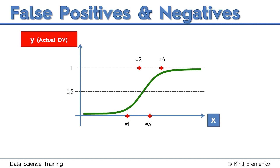We pick out four values that we know exist in our data set — the ones used to create this logistic regression — and do the same thing with them: see where they end up when we apply the model. The label on the vertical axis has changed to Y because these are actual known values. In red is the actual value of the dependent variable. Observations one and three did not take up the email offer; observations two and four did. Step one is to project these values onto the curve — that's our blue dots — showing where they've been modeled.